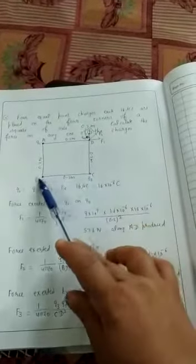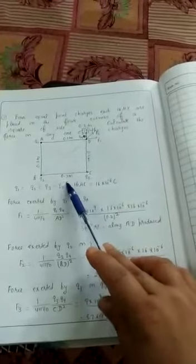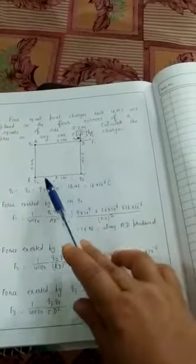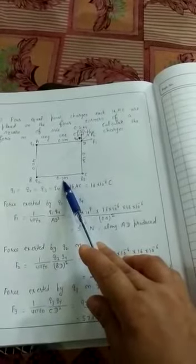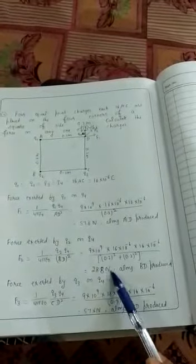This BD value we can find out by using Pythagoras theorem. This is a right angle triangle, so BD² can be written as BC² + CD², that is 0.2² + 0.2².